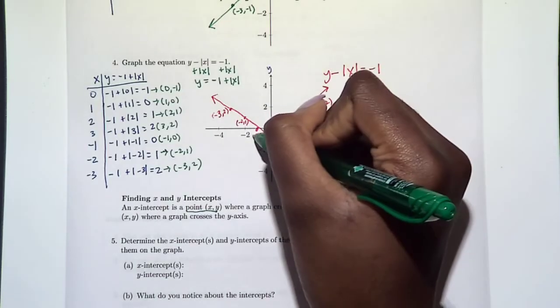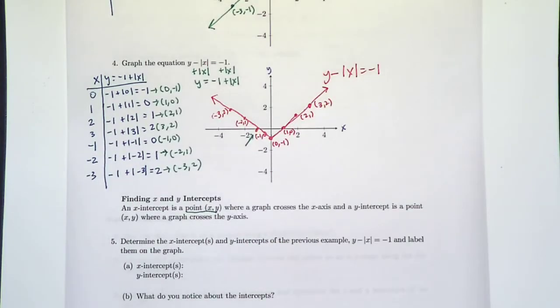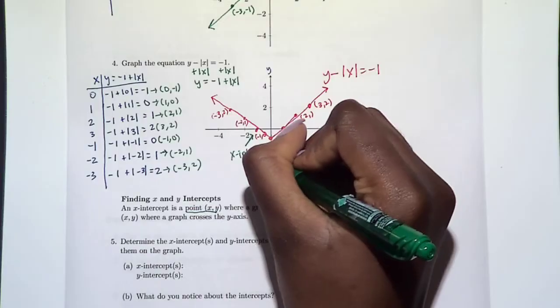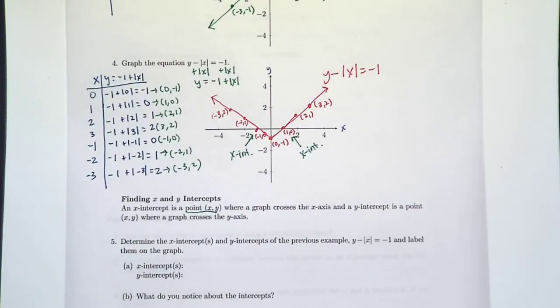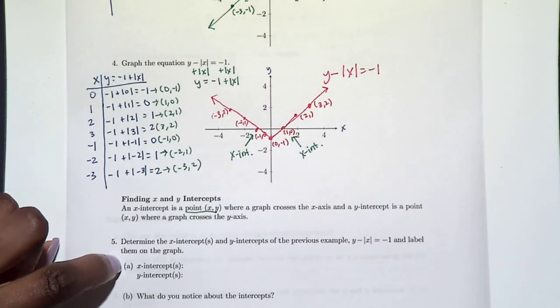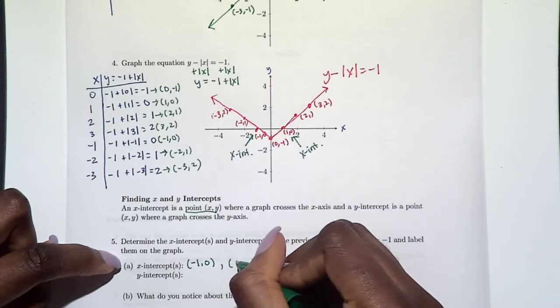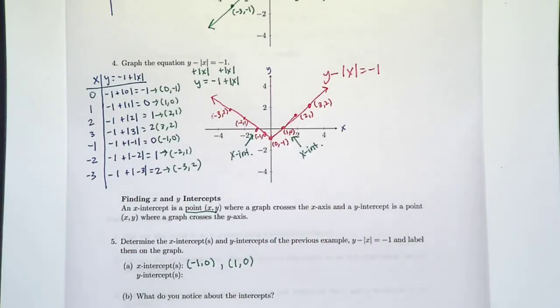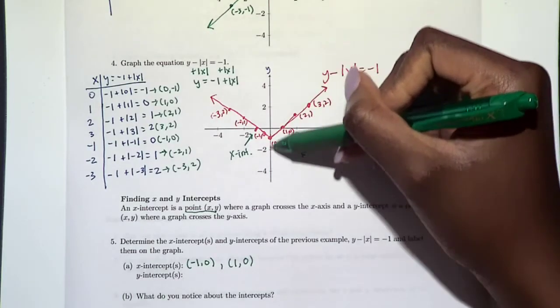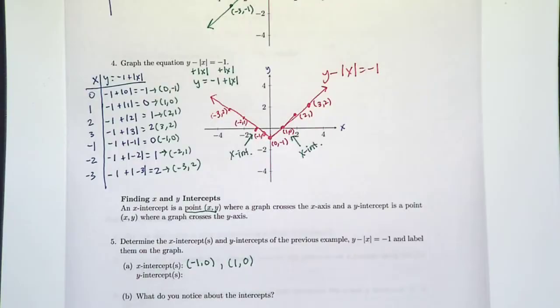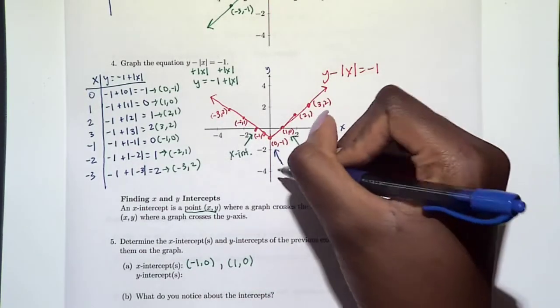It crosses right there and it also crosses there, so I'll say x-int for x-intercepts because that's where we cross the x-axis. I'm also going to put it down here, so our x-intercepts are the points (-1, 0) as well as the point (1, 0). Now for y-intercepts, we're looking at the y-axis, and where does our graph cross the y-axis? It happens right here—that's the point (0, 1).